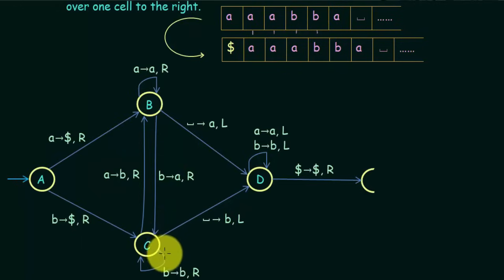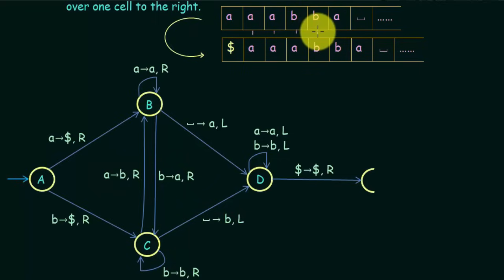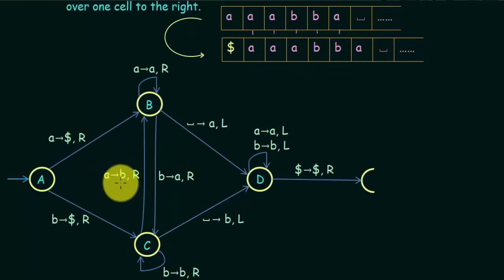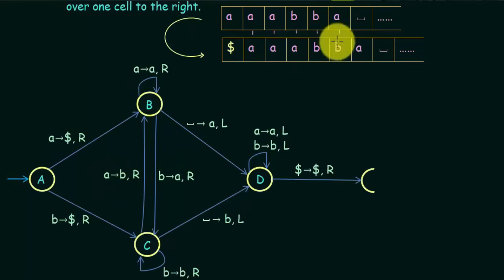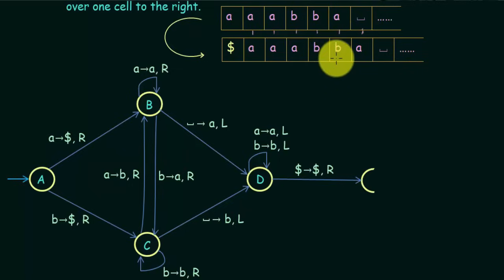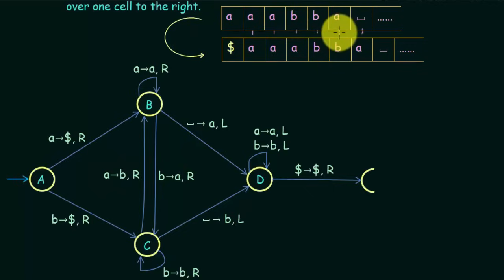In state C, if you see a B, replace it with B itself and move one step to the right — continue for all B's. If you see an A in state C, replace that A with B and move one step to the right, then go back to state B. This is because when shifting right, the previous element held a B, so you write B in the current cell.